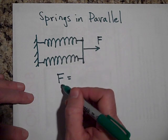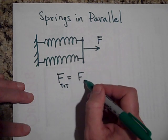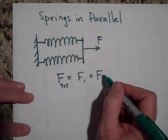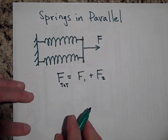So F total is equal to F1 plus F2. And if there were more, you'd say plus three plus four. I'll just do two for right now.